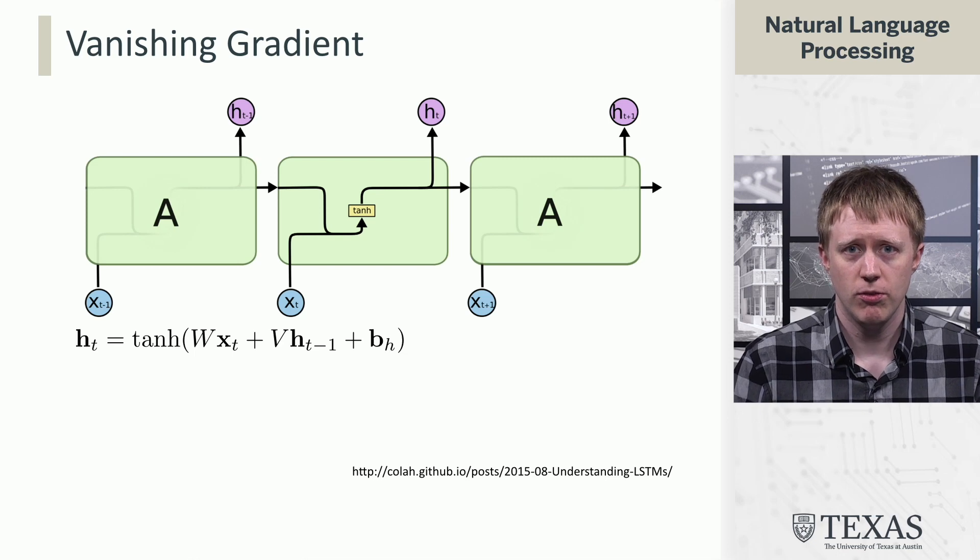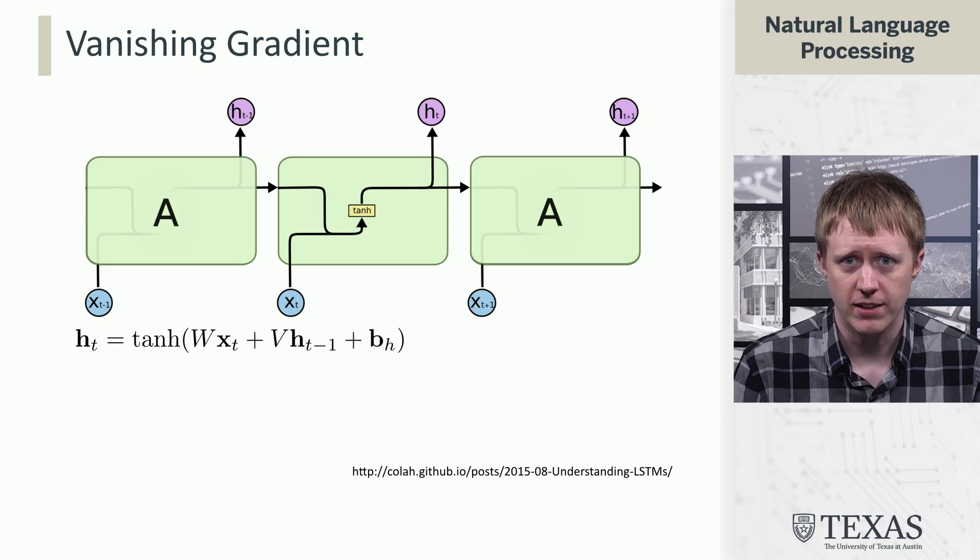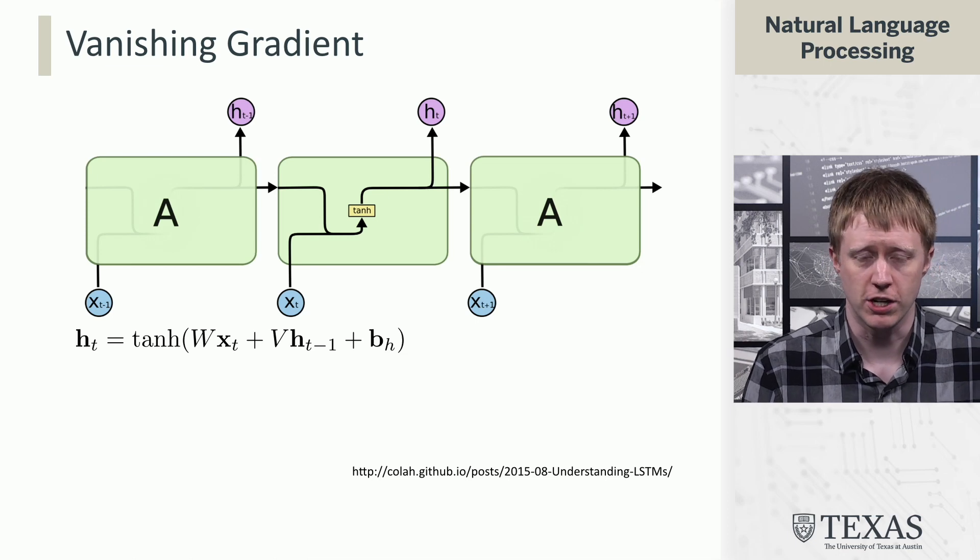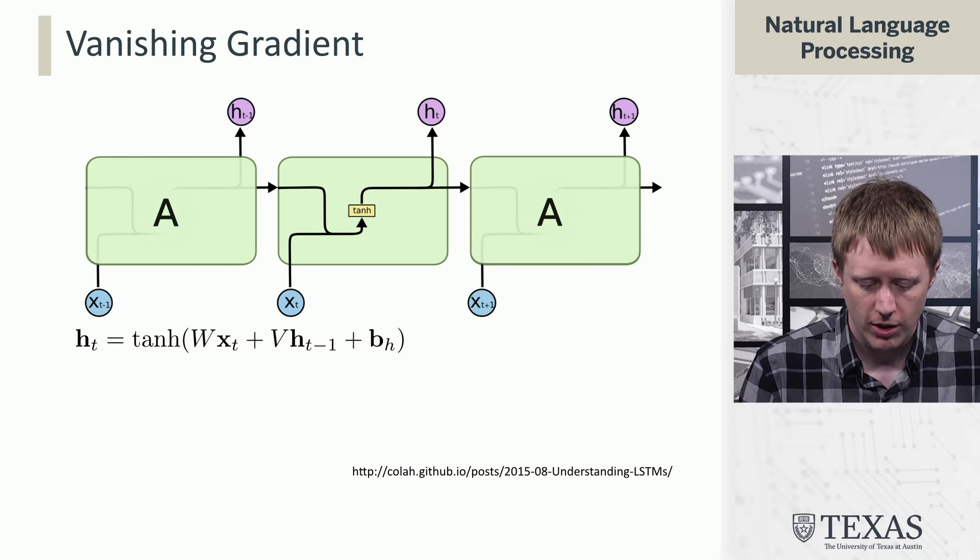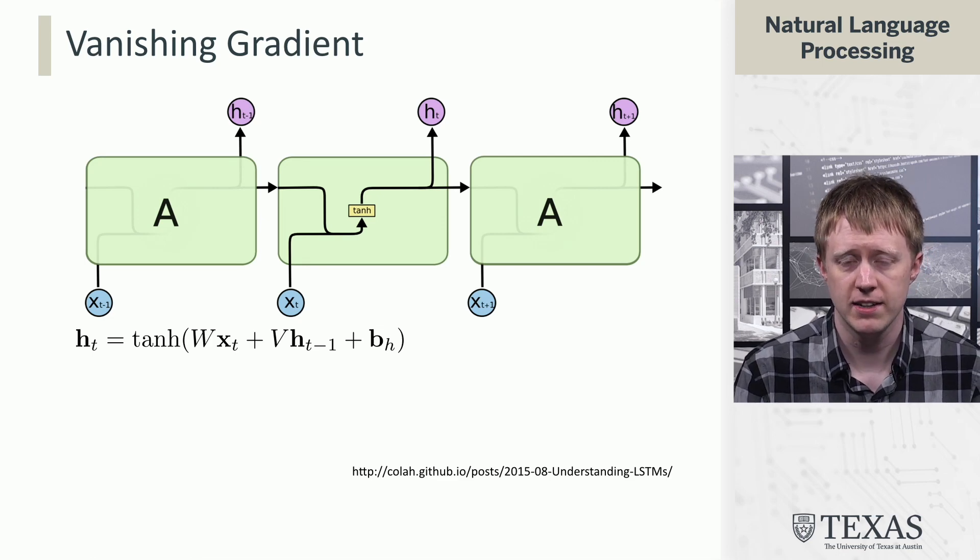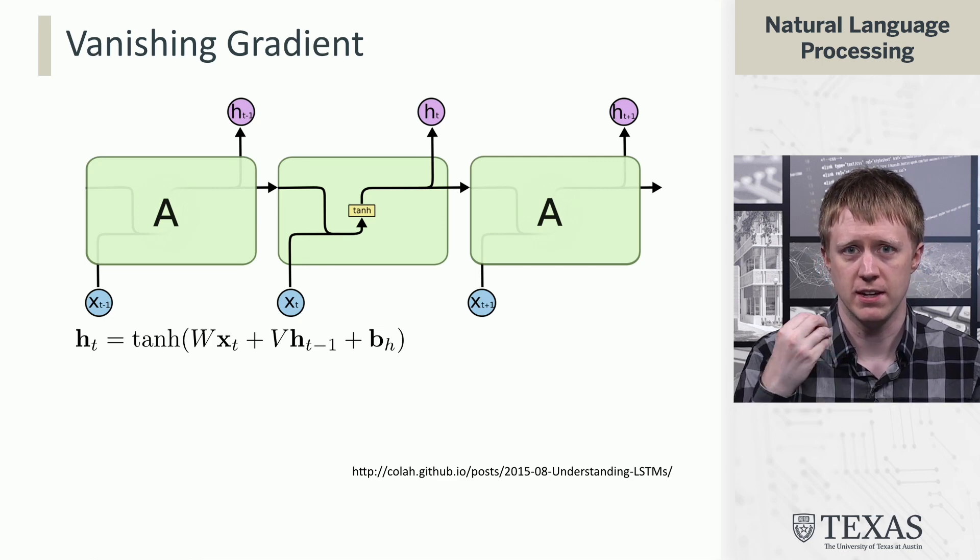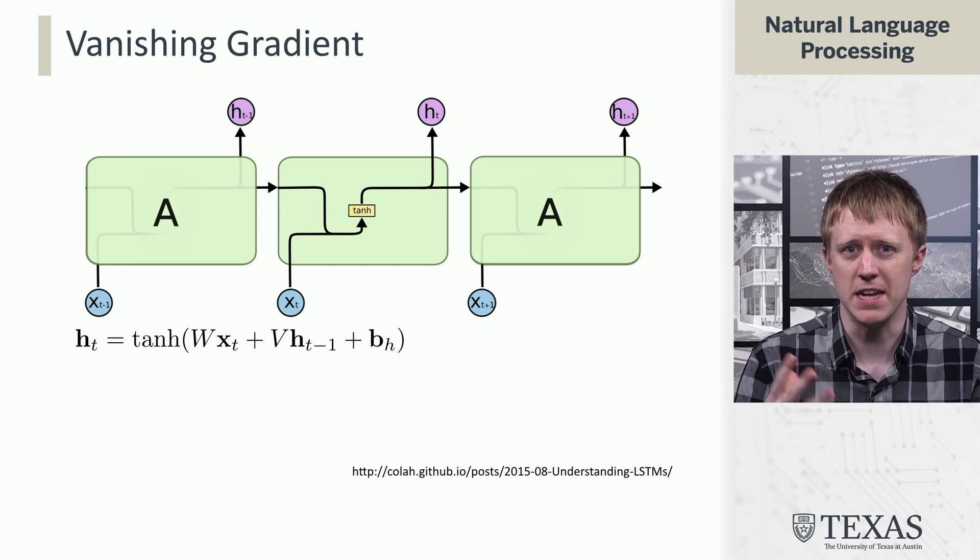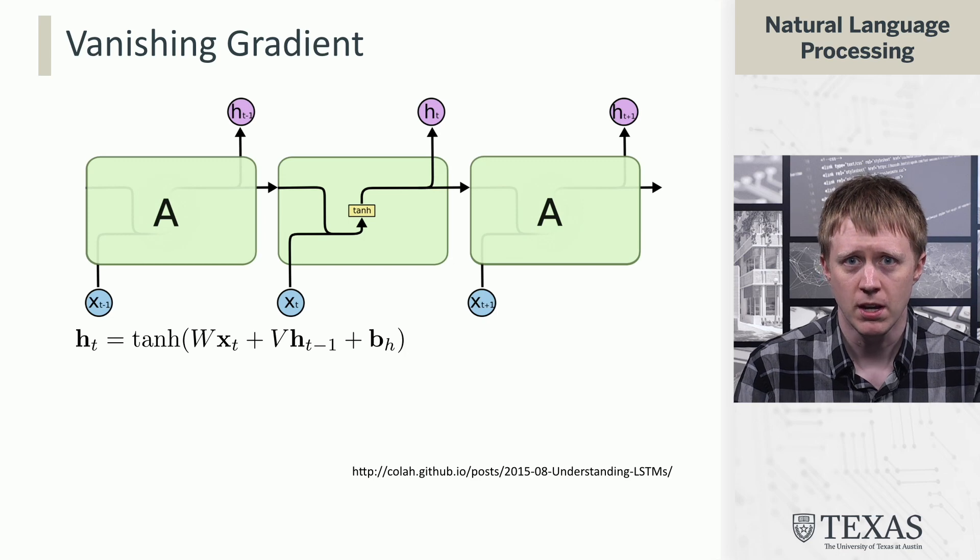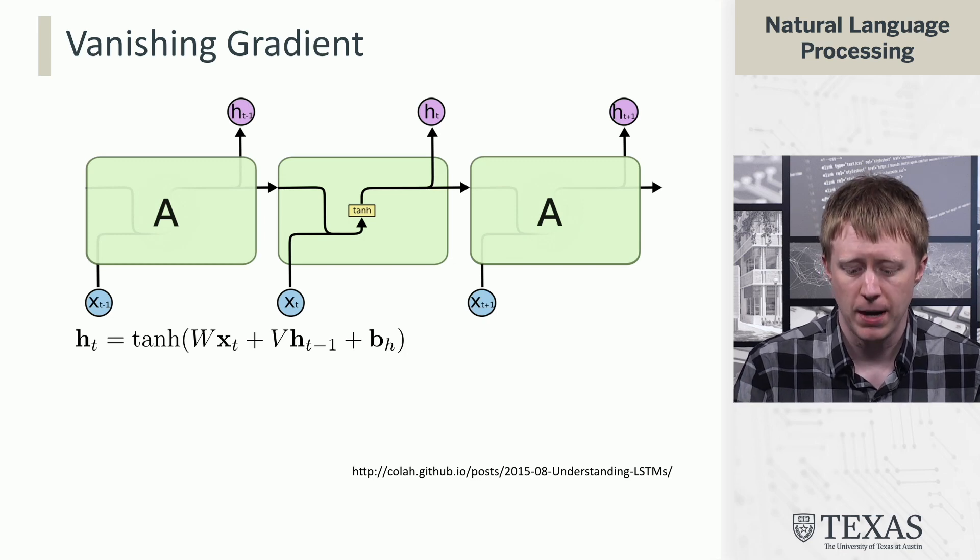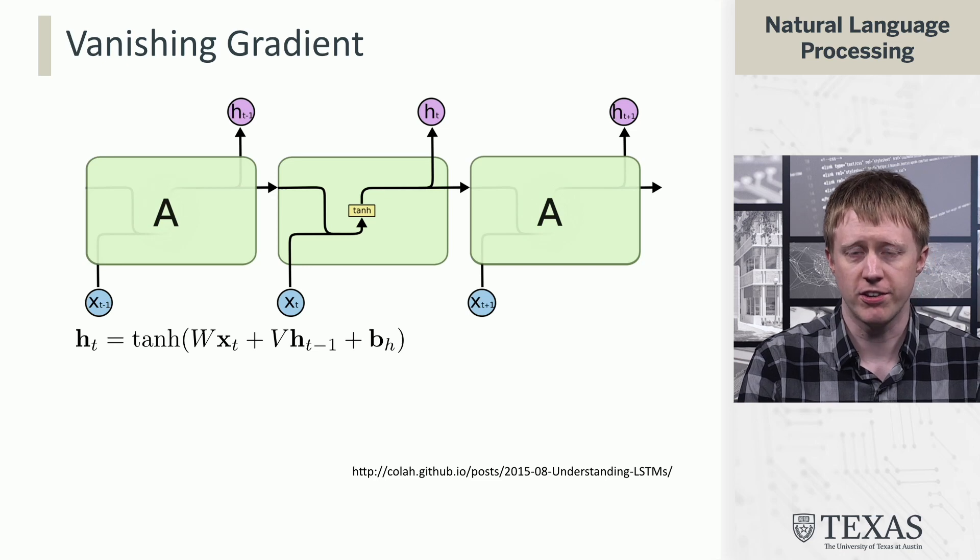The issues with RNNs stem from a problem called the vanishing gradient problem. I've listed here a formula for computing the updated hidden state representation based on the input x and the previous hidden state h_{t-1}, and b is just a bias term. We're not going to go through this formula in detail, but the really key thing here is that there's a tanh involved.